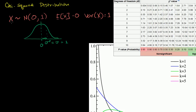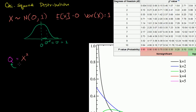A chi-square distribution: if you take one of these random variables, let me define a new random variable Q that is equal to — you're essentially sampling from this standard normal distribution and then squaring whatever number you got — so it equals x squared. The distribution for this random variable is going to be an example of the chi-square distribution. What we're going to see is that the chi-squared distribution is actually a set of distributions, depending on how many sums you have. Right now we only have one random variable that we're squaring.